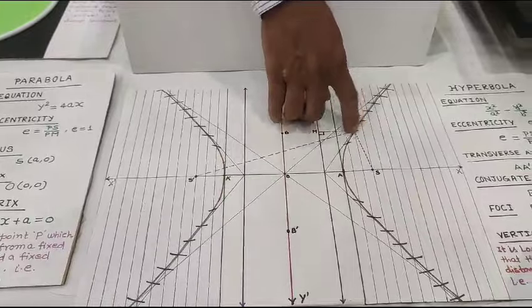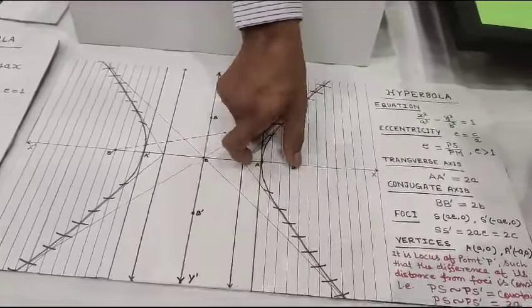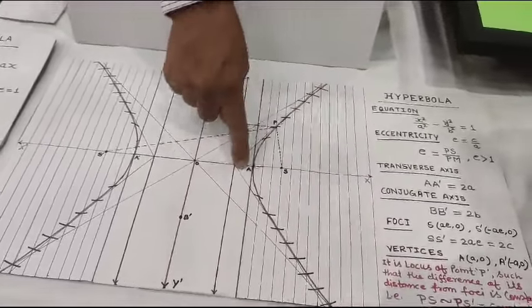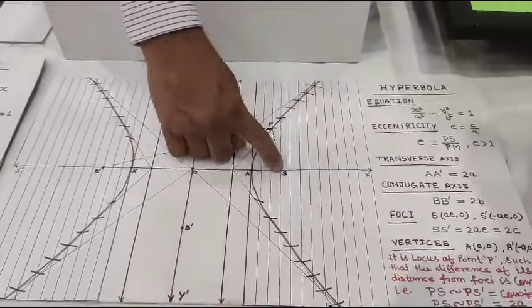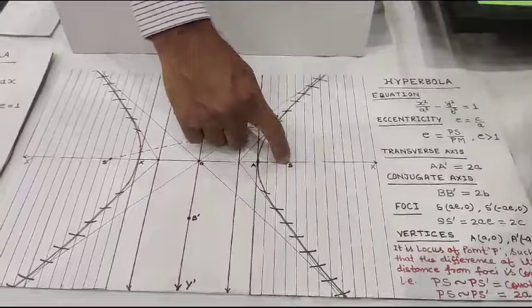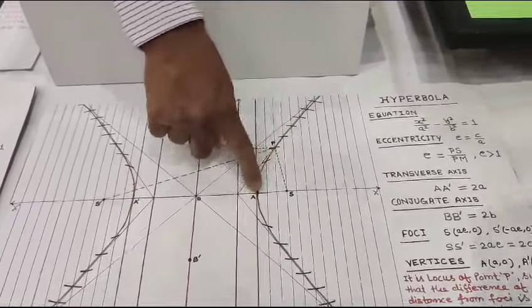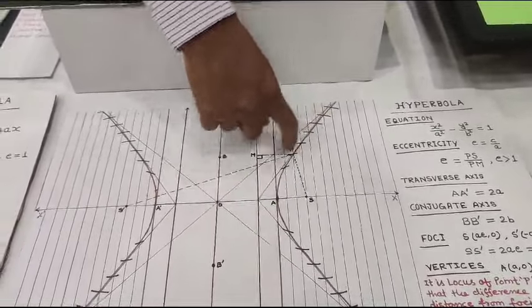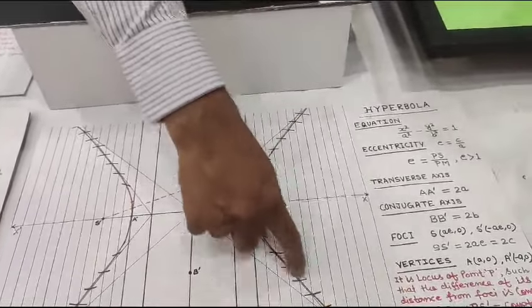The eccentricity, and the height-to-base ratio is 3 to 2. We are going to focus on this and we are going to trace a hyperbola.